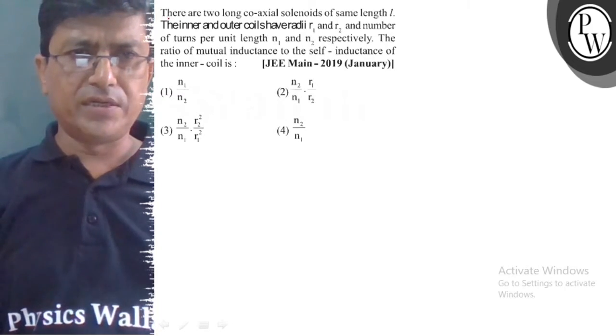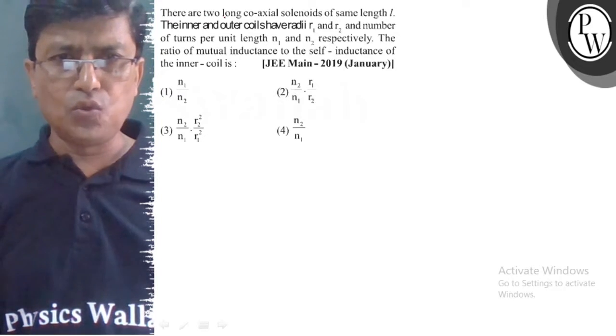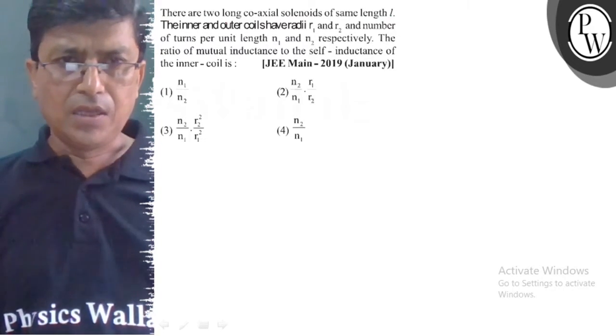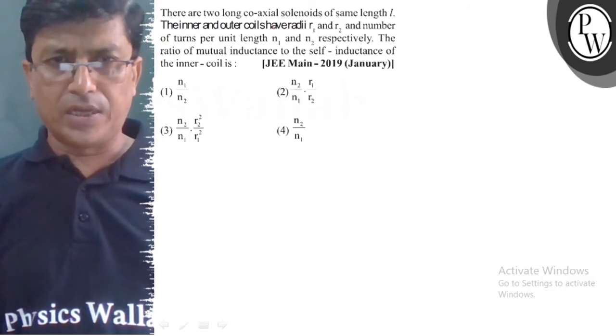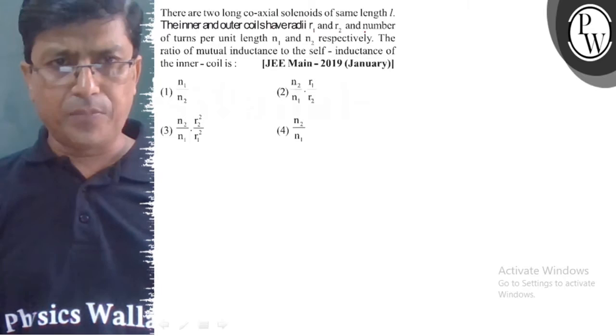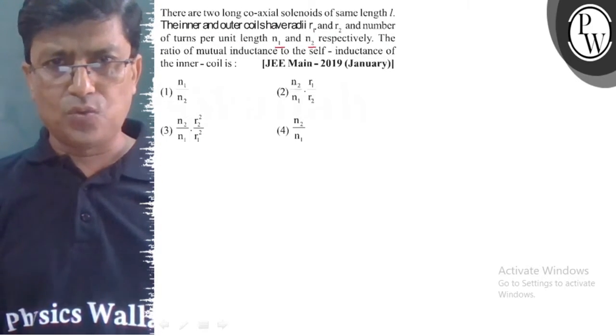Hello, let's understand the question first. The question is that there are two long coaxial solenoids of same length L. The inner and outer coils have radii R1 and R2 and number of turns per length N1 and N2 respectively.